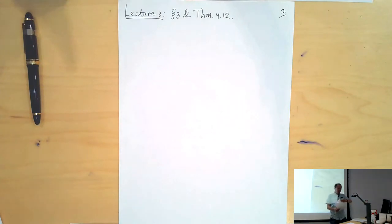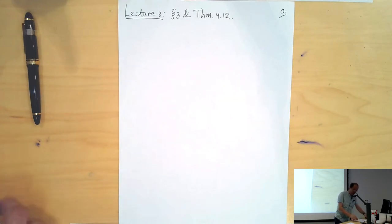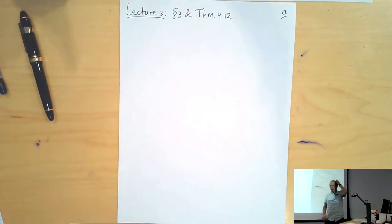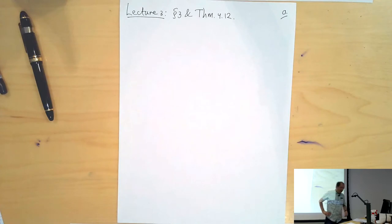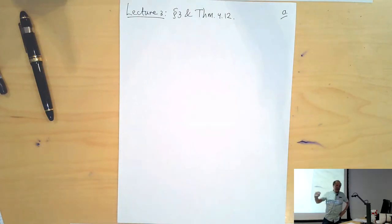Time for lecture three. In the second lecture at the end, I gave you a parametrization of the Z-points of the torsor we call T, and there was a kappa map giving a map from Z to the r to T of Z.